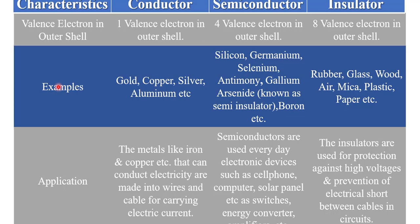Examples: conductors include gold, copper, silver, aluminium, etc. — all are good conductors of electricity and heat. Semiconductors include silicon, germanium, antimony, gallium arsenide, and boron. Insulators include rubber, glass, wood, air, mica, plastic, and paper.